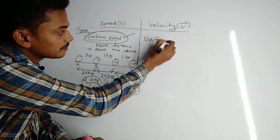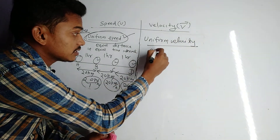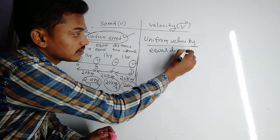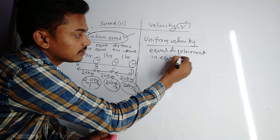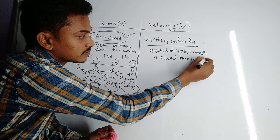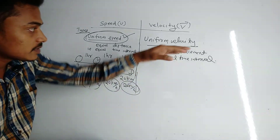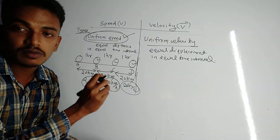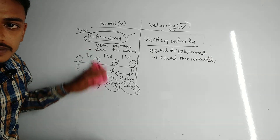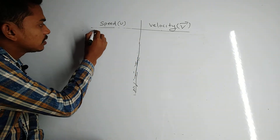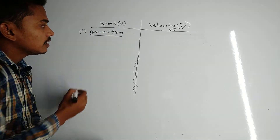Similarly, for uniform velocity: if a body covers equal displacement in equal time interval, the body is said to be moving with uniform velocity.